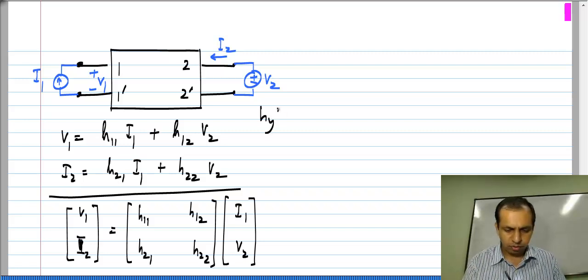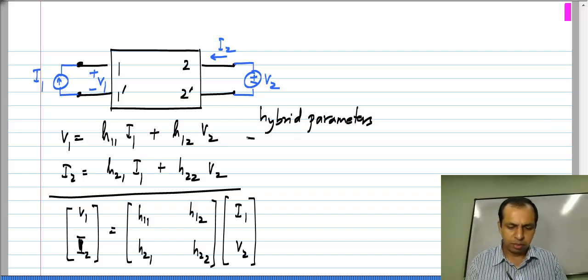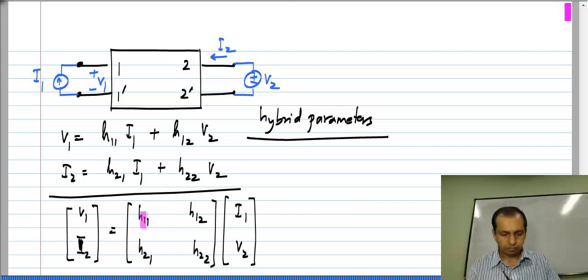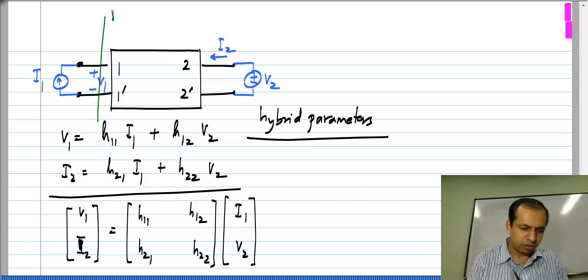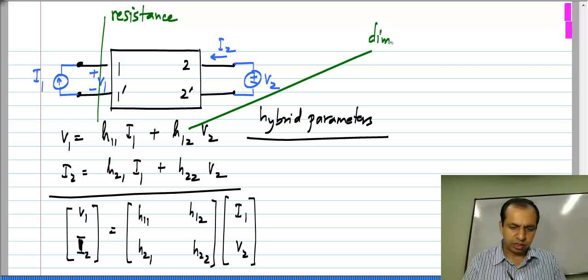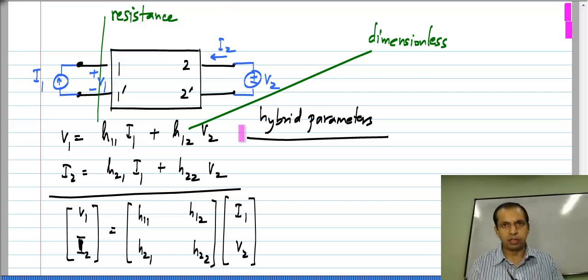These are known as hybrid parameters and they are hybrid parameters because this voltage equals H11 times a current, so H11 has dimensions of resistance. This voltage equals H12 times V2, so H12 is dimensionless. This has dimensions of resistance, that is dimensionless. This is obviously for dimensional consistency.